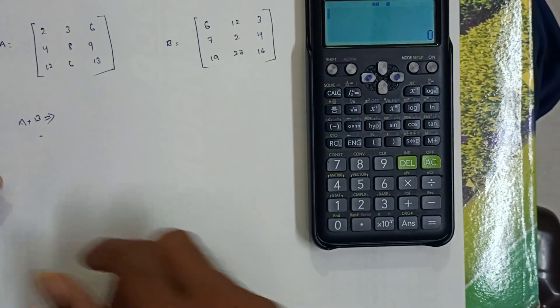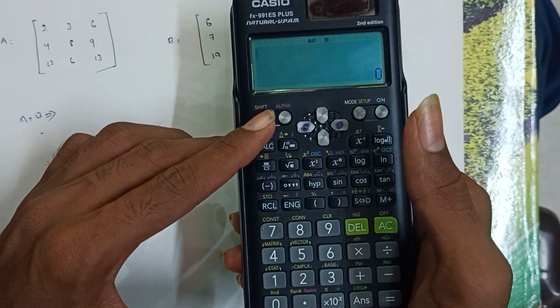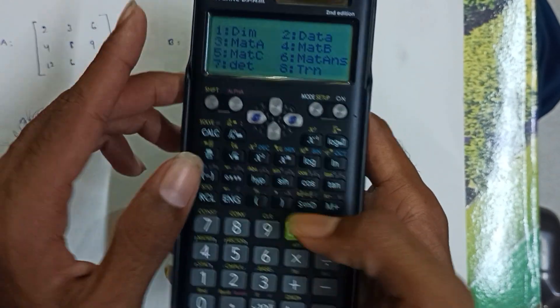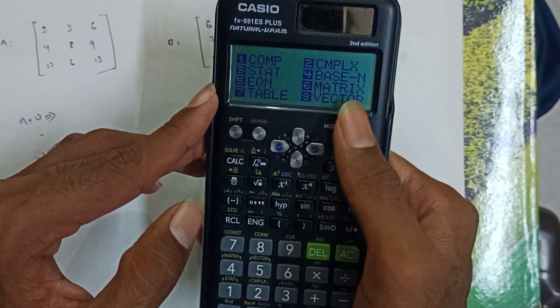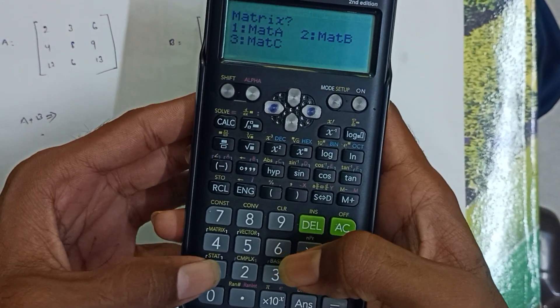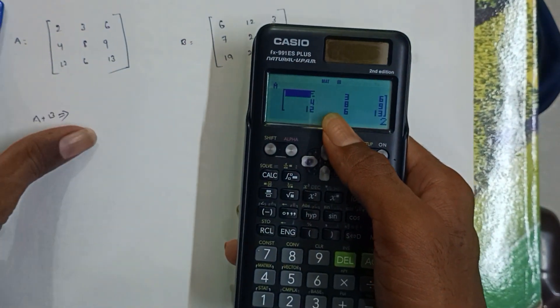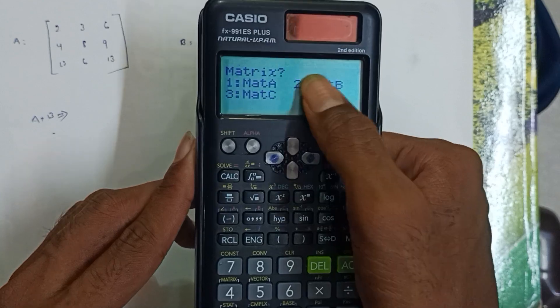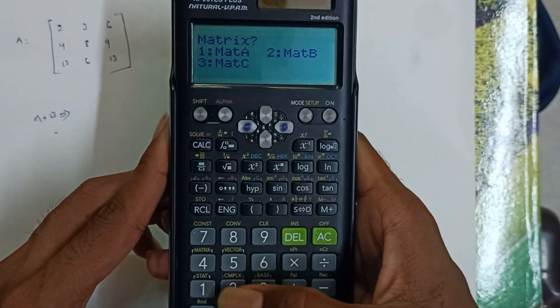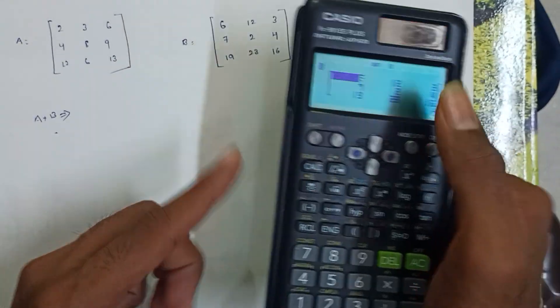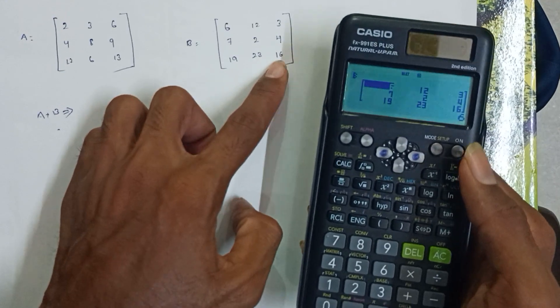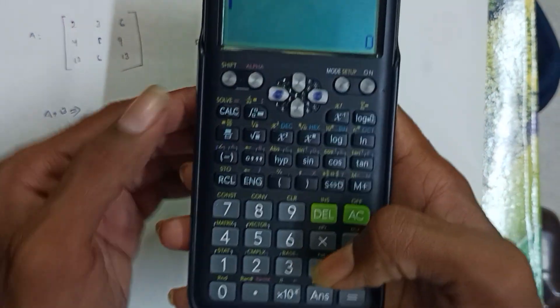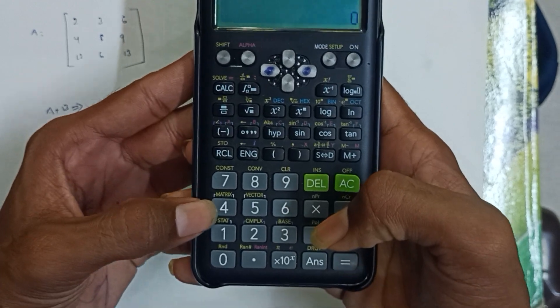Now for addition of matrices. Press Shift, then 4 to access Matrix A. Select option 3 for Matrix A. Then press the plus button. Press Shift plus 4 again, select option 4 for Matrix B.